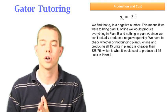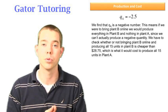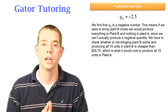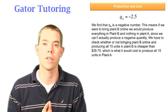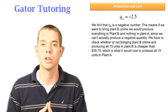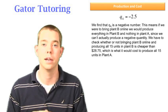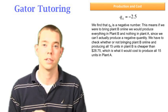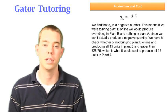That's saying that for any level of output, if we do bring plant B online, it's going to be cheaper to produce all of that output in plant B than it would be to produce in plant A. By getting a negative number here, we know we're going to produce zero in plant A if we find it's beneficial to bring plant B online.